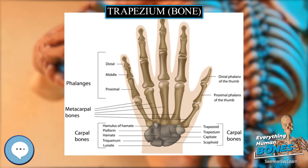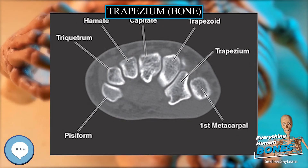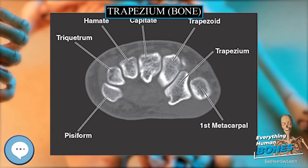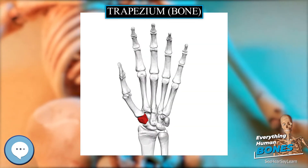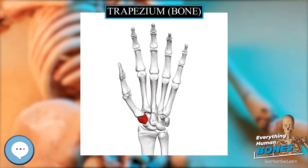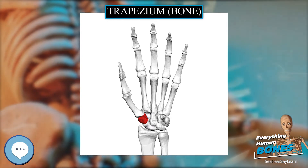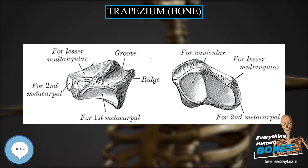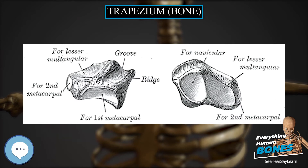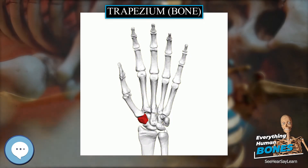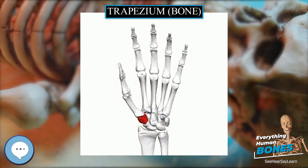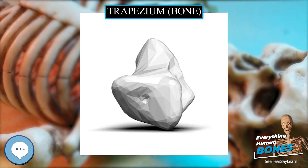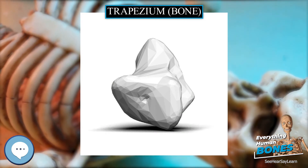The palmar surface also affords attachment to the transverse carpal ligament. The lateral surface is broad and rough for the attachment of ligaments. The medial surface presents two facets: the upper, large and concave, articulates with the trapezoid bone; the lower, small and oval, articulates with the base of the second metacarpal.